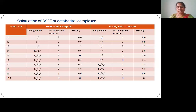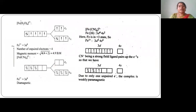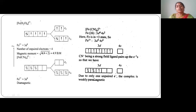Now let's see an example with a strong field ligand: Fe(CN)6³⁻. Here cyanide is a strong field ligand. Iron (Fe) has atomic number 26 and electronic configuration 3d⁶4s². In the +3 oxidation state, the configuration becomes 3d⁵4s⁰, so five electrons are in the d orbital. Since cyanide is a strong field ligand, the electrons pair up in t2g. The number of lone pairs of electrons is only one, and that is in t2g.